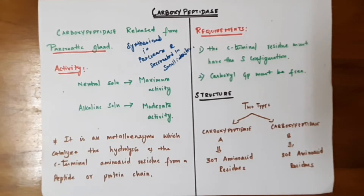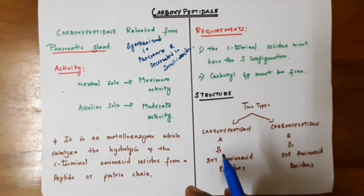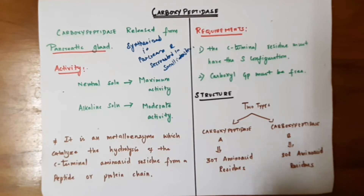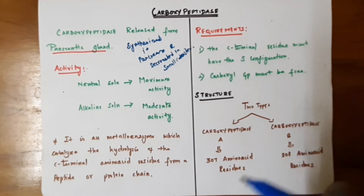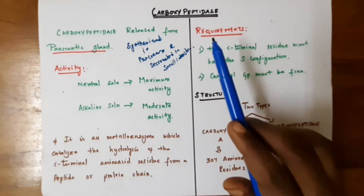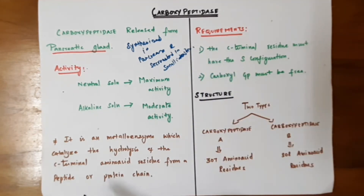Hi everyone, this is Mike and C channel. In the last video we discussed about metalloenzymes, their types. Metalloenzymes are metal and enzymes combined together to form a big macromolecule. It has two broad categories: redox metalloenzymes and non-redox metalloenzymes. Non-redox metalloenzymes include examples such as carboxypeptidase, carbonic anhydrase, and LADH. In this video we're going to discuss the biological role of carboxypeptidase.